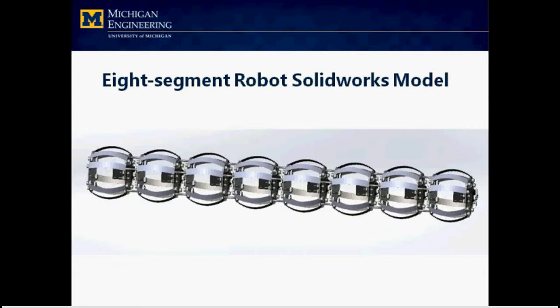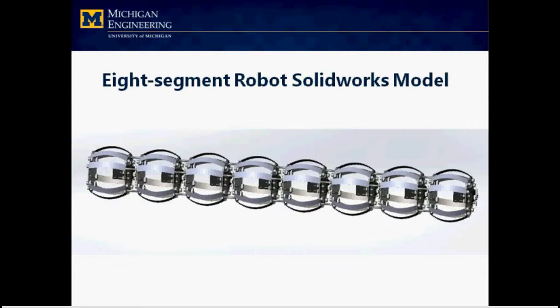This is a SolidWorks model of an eight-segment robot. An eight-segment robot is produced to carry out some experiments on gate optimization. According to Hongbin's research, different gates correspond to different kinematic and dynamic phenomena.